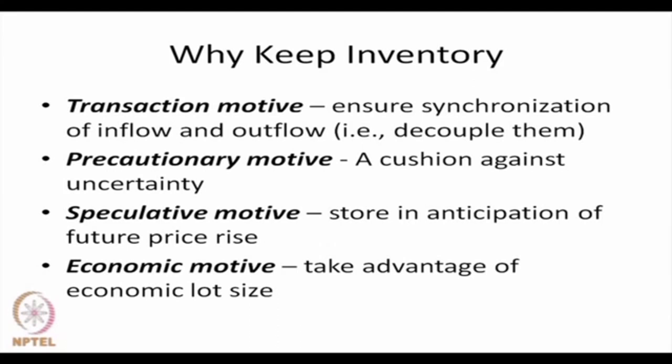The second is the precautionary motive — a cushion against uncertainty. The demand for finished products from customers may change; it is not constant. If it varies and one does not want to lose sales, one must have sufficient inventory so that even uncertain demand is met from the inventory. There has to be a sufficient amount of stock, usually called buffer stock, to guard against uncertainty in the variation of demand. This is the precautionary motive.